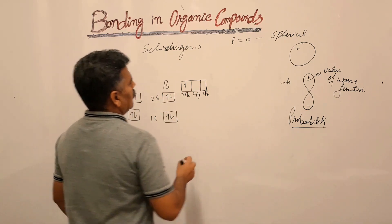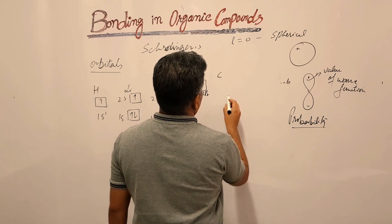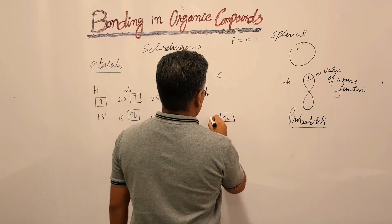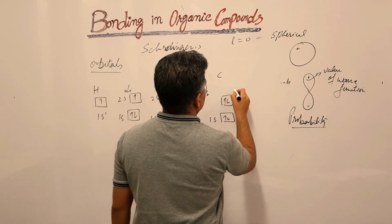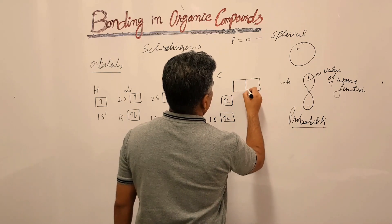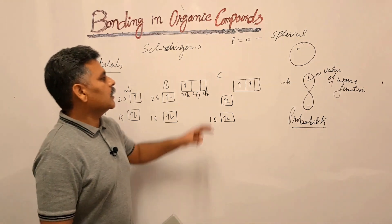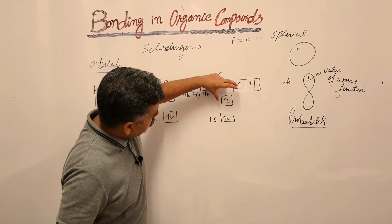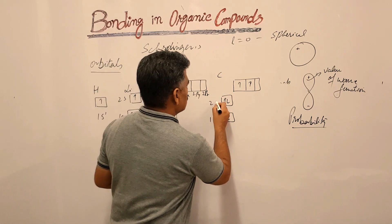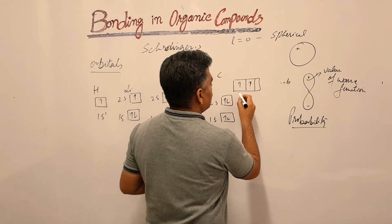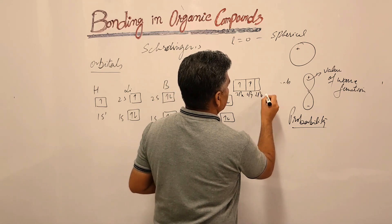For carbon, we have the electron configuration 1s2, then 2s2. This is the valence orbital of carbon — 2s with 2 electrons, and then 2px, 2py, and 2pz.